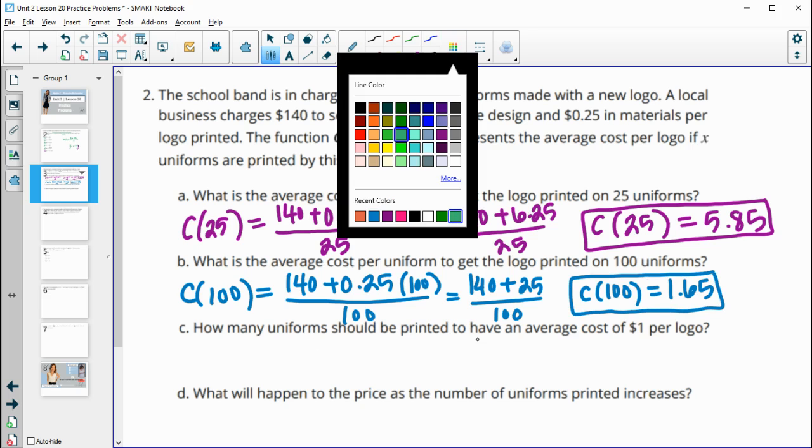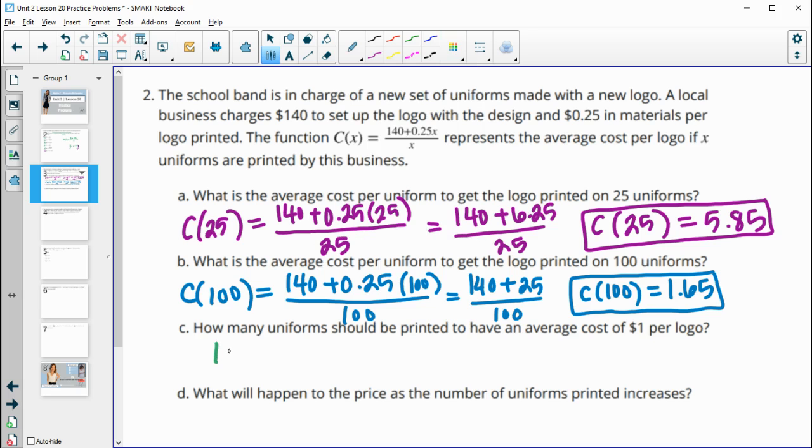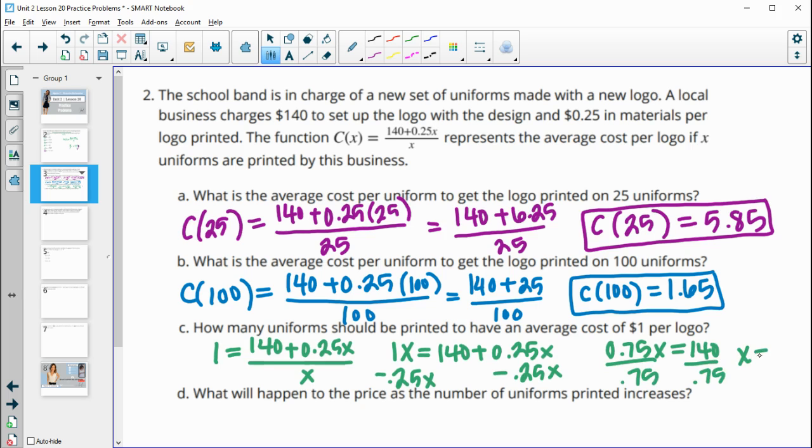So what would it be? How many uniforms should be printed to have an average cost of $1? This means that we're going to plug in our average cost needs to be a dollar. So we don't know how many uniforms this is yet. We're going to leave the X's in here and solve for X. We'll multiply X to both sides. So then we get X equals 140 plus 0.25X. We can get our X's together by subtracting 0.25X to both sides. So 1X minus 0.25 is 0.75X equals 140. So divide by 0.75, and you get about 187. So we need to print about 187 logos or uniforms for the shirt to cost $1 per uniform.